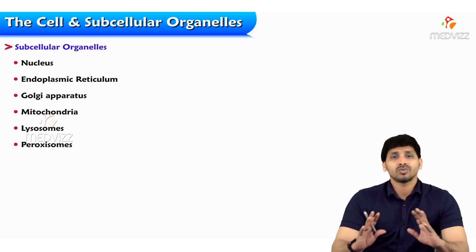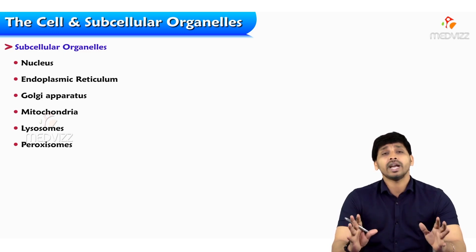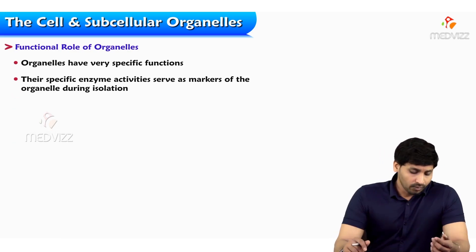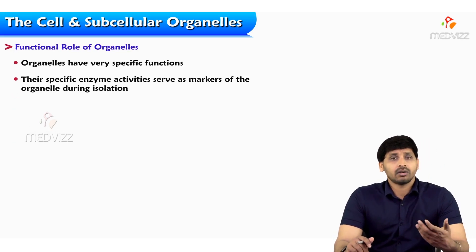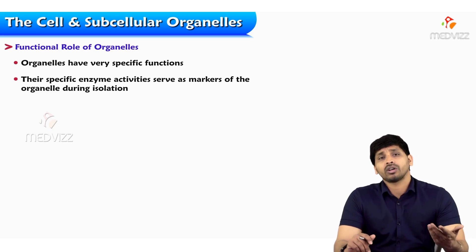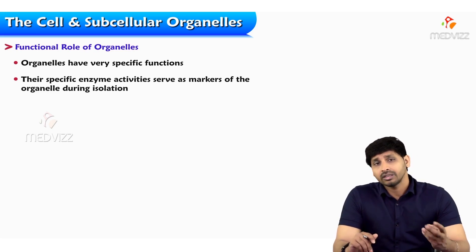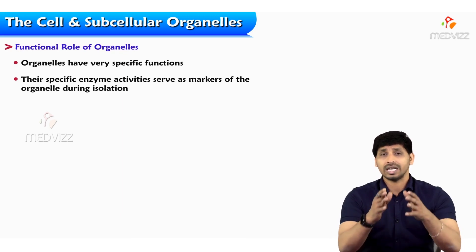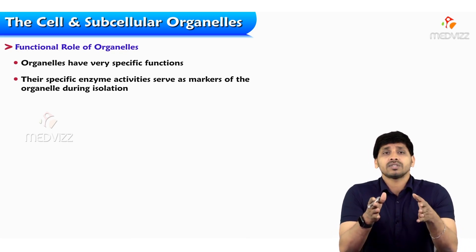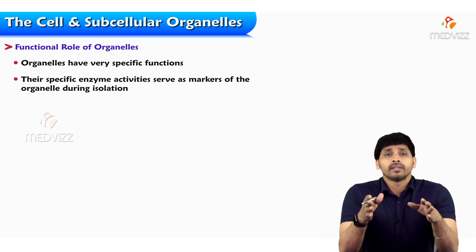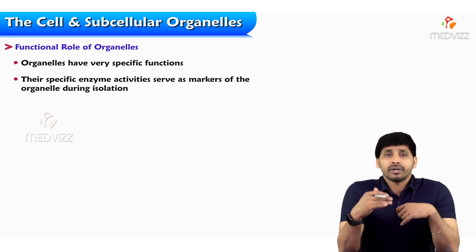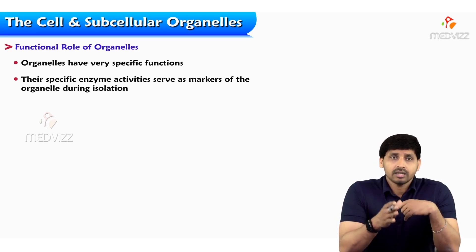Peroxisomes fight with free radicals or oxidants that enter the cell. Each organelle has very specific functions, and their specific enzyme activity serves as a marker for organelles during isolation. As we discussed in the separation of subcellular organelles by ultracentrifugation, a particular subcellular organelle can be identified by identifying its marker enzyme.